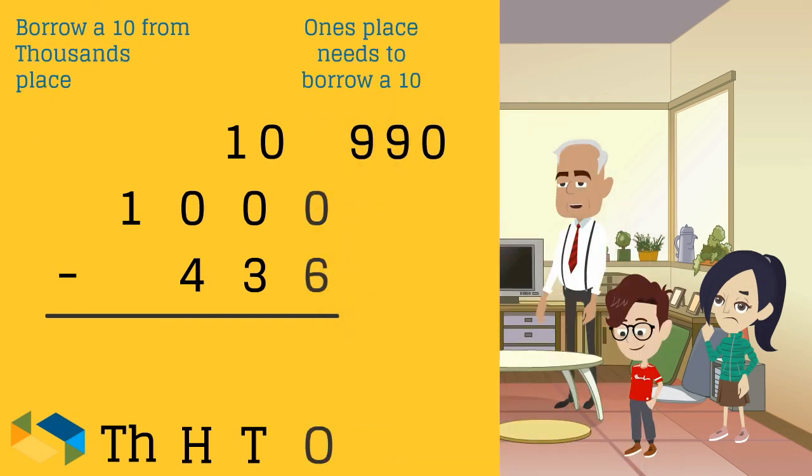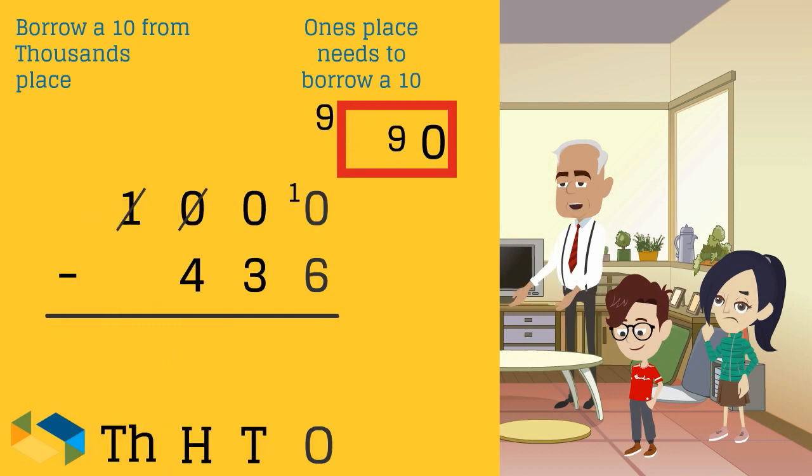The 10 at the ones place borrowed is now written at the ones place. And the 1000 is replaced by 990. So we write these in this manner.